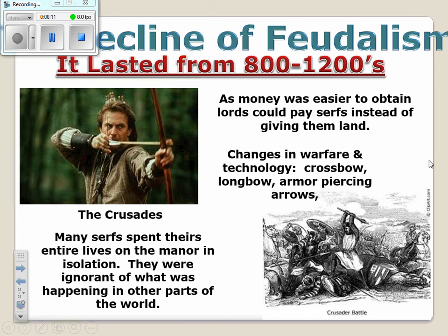Feudalism will end around the 1200s and begins to fade out because the economy begins to change. As paper and coin money is introduced, people could pay serfs with coins and currency rather than just giving them land. Changes in warfare — from the crossbow to the longbow to armor-piercing arrows — also changed feudalism. During the Dark Ages and medieval period, serfs never left their feudal towns. But during the Crusades, people became soldiers and left those towns to venture out into the world, returning with new knowledge that reshaped Europe and contributed to the Renaissance.